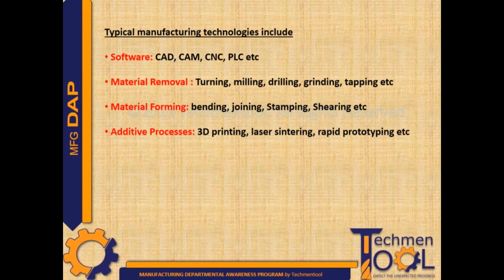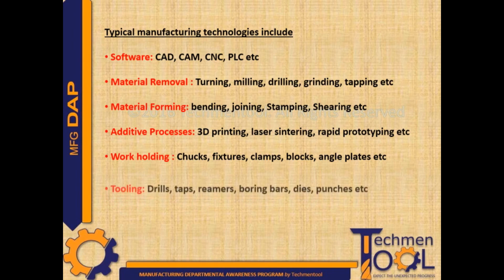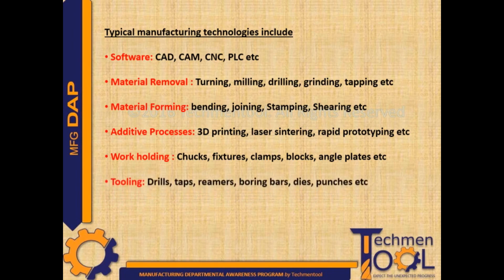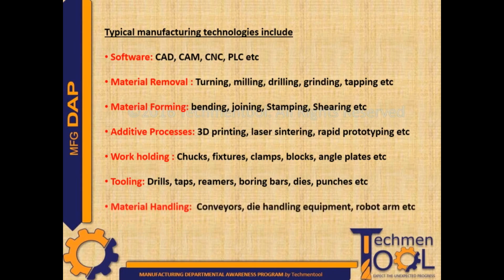Additive processes include 3D printing, laser sintering, rapid prototyping, etc. Work holding examples include chucks, fixtures, clamps, blocks, and angle plates. Tooling includes drill taps, reamers, boring bars, dies, punches, etc. Material handling includes conveyors, die handling equipment, robot arms, etc.